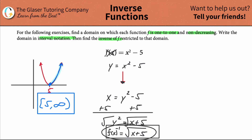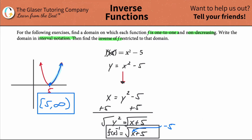Now what is the domain of this inverse function? Remember, anything under a square root must be positive — this value cannot be negative. So what that means is if you choose an x value of negative five, the result under the radical would be zero, and you can take the square root of zero — that's simply zero. But you cannot take the square root of a negative number.